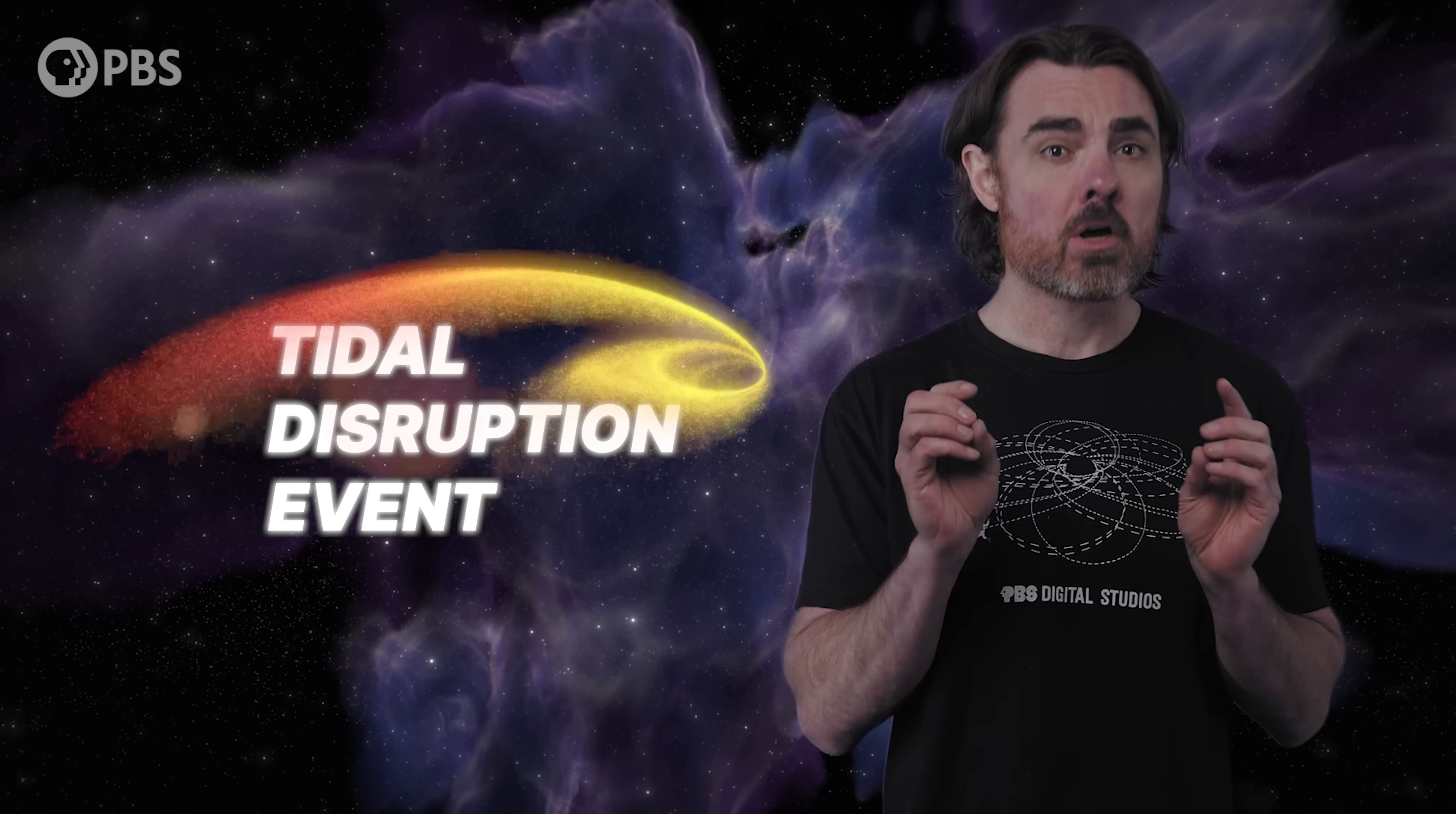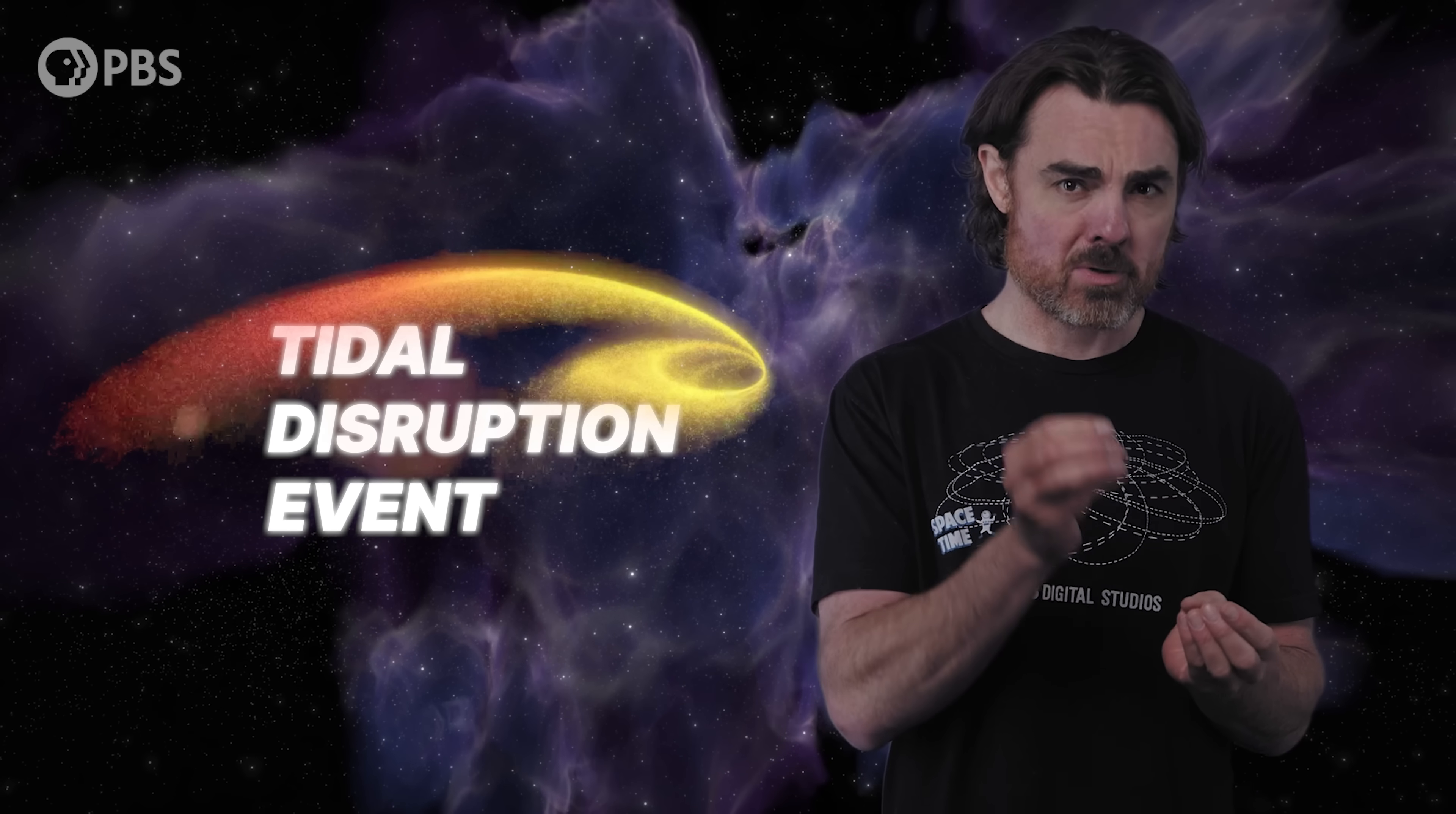That's the Sagittarius A-star supermassive black hole. These are perilous orbits, and sometimes a star wanders just a little too close to the lurking monster, leading to its utter destruction in a spectacular phenomenon known as a tidal disruption event. We've never seen a TDE in the Milky Way, but we've seen them in other galaxies.